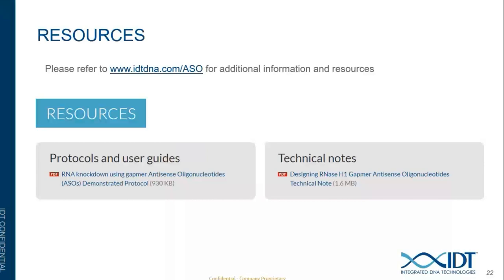Regarding endotoxin testing: IDT can perform endotoxin testing for an additional fee, quoted through the custom quotes team. However, results do not gate the product — the ASO ships regardless of whether it passes or fails, along with the endotoxin report. For sterility concerns, a 0.2 micron filter can be used before use. This is generally not necessary for cell culture work but is recommended for in vivo testing.